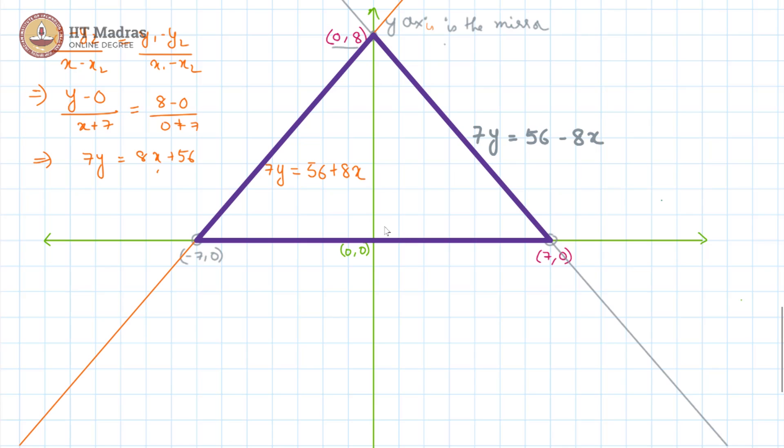So, all possible y coordinates in this set. Every point within this triangle and on the triangle itself count. As you can clearly see the least y coordinate here is 0 and the maximum y coordinate here is 8. So, the set of y coordinates is going to be the closed interval 0 comma 8 because we are considering the triangle also to be part of this set, not just the points interior to the triangle.